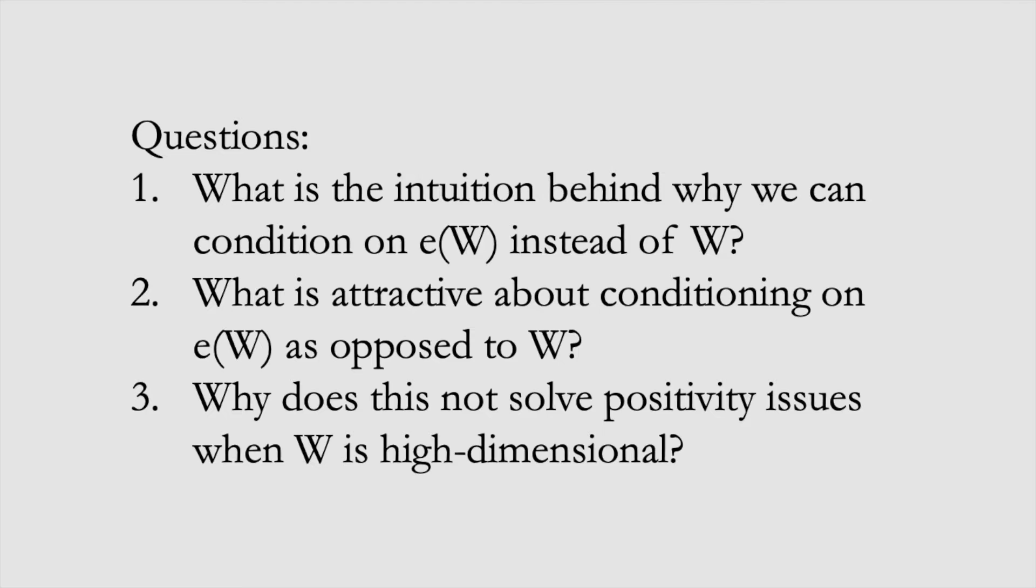I now have three questions for you about what we just saw on propensity scores. First, what is the intuition behind why we can condition on the propensity score e(W) instead of W? Second, what is attractive about conditioning on e(W) as opposed to W? Third, why does this not solve our positivity issues when W is high-dimensional?